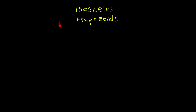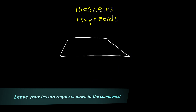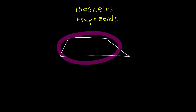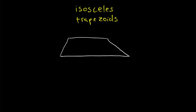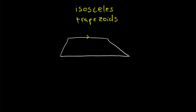What are isosceles trapezoids? That's what we'll be going over, as well as some of their properties, in today's Wrath of Math lesson. You may recall that in general, trapezoids can look kind of strange — they lack a lot of the nice properties that other quadrilaterals we study have. Remember that a trapezoid is just a quadrilateral with exactly one pair of parallel sides, and these parallel sides are called the bases of the trapezoid.